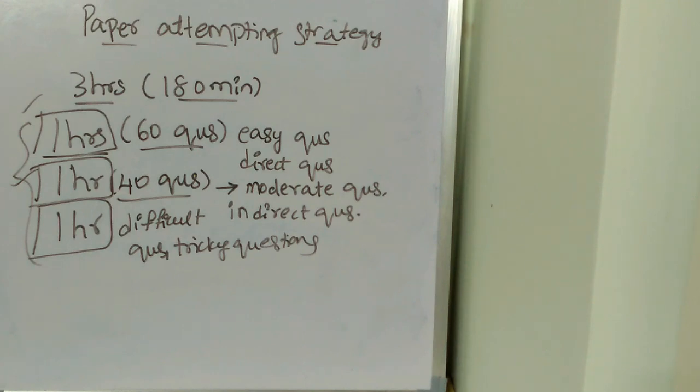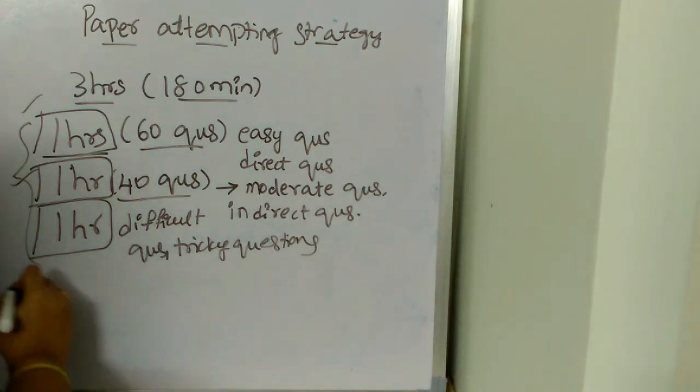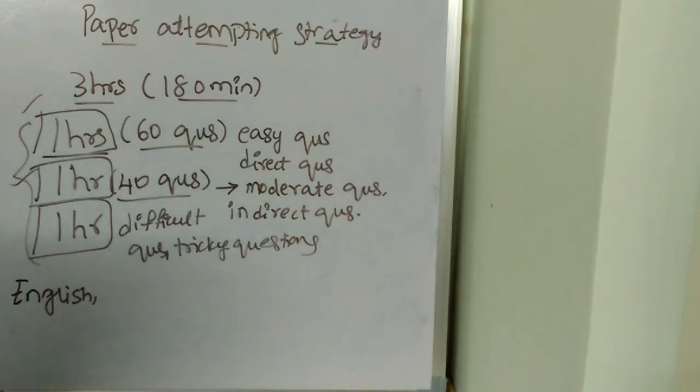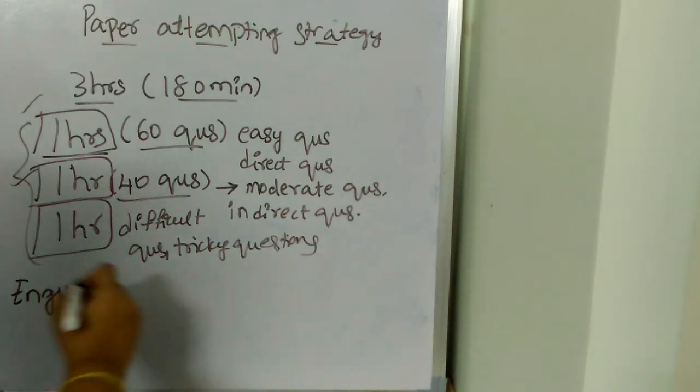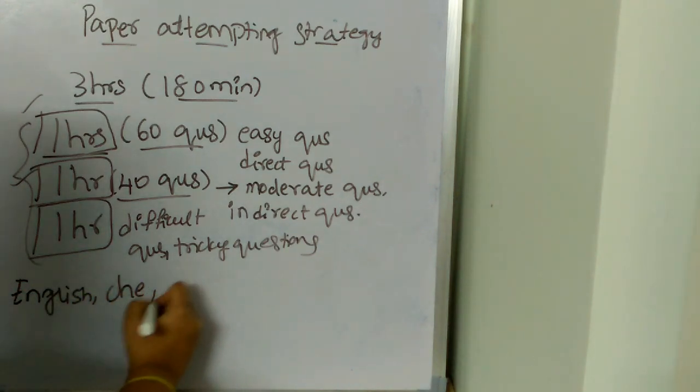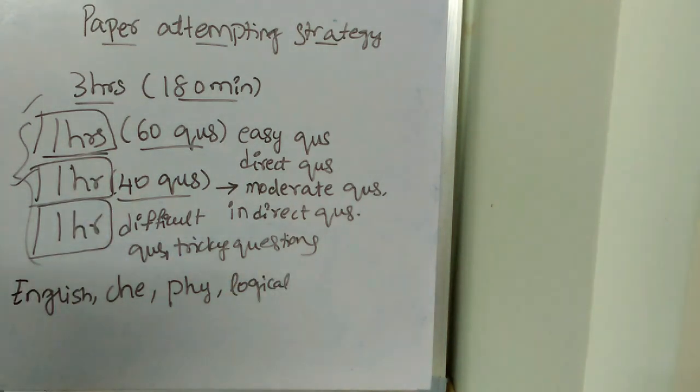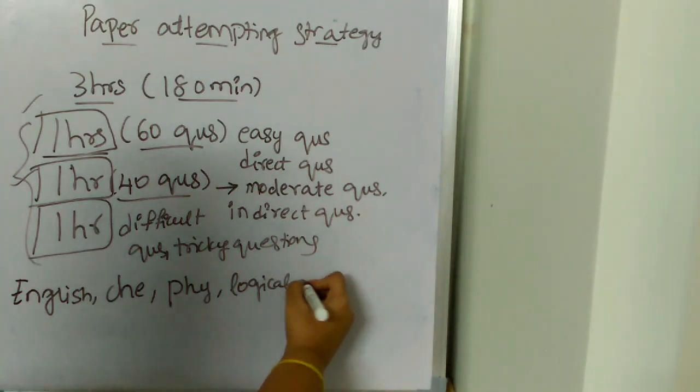From which subject you need to solve in order to get a very good score in NEET set. You need to start solving paper with English. First start solving with English and then go with Chemistry. Next Physics, next Logical Reasoning, and then you can go with Maths.